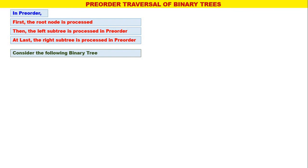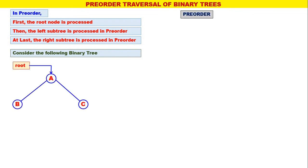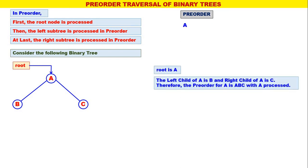Consider the following binary tree — a simple tree with only 3 nodes: a, b, c. In pre-order, root is a, so we write down a. The left child of a is b and the right child of a is c, therefore the pre-order for a is a, b, c.